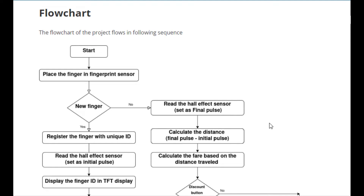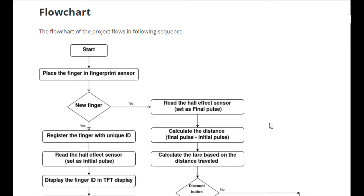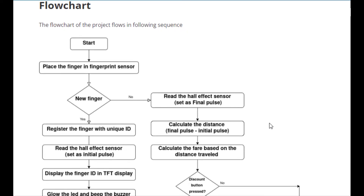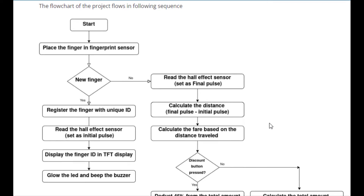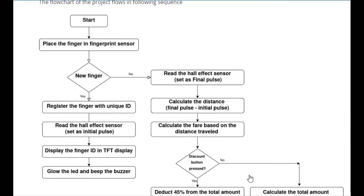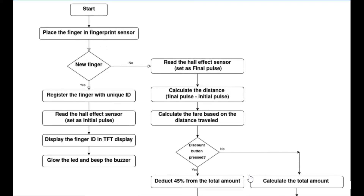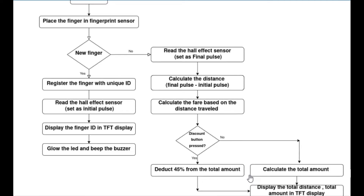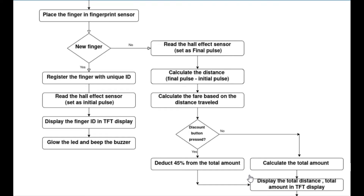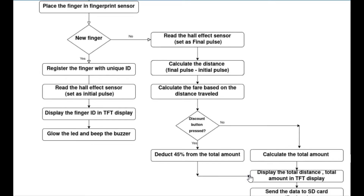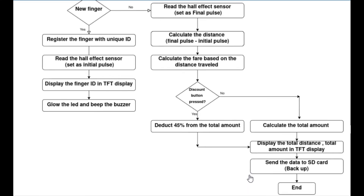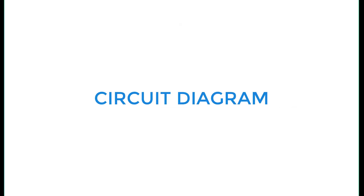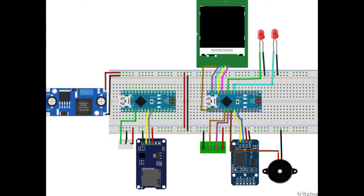This is the flowchart of our system. The program flow is clearly explained in the following block. This is the circuit diagram of our project. All the connections should be made according to this diagram.